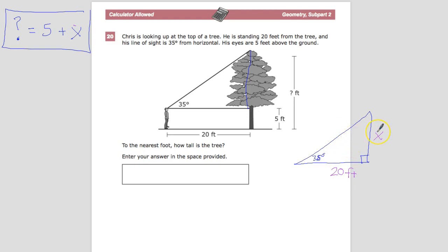And I don't know anything about this side. In order for Pythagorean theorem to be effective, I need to know the value of at least two of the sides. So I don't know that. So I'm going to use trig.